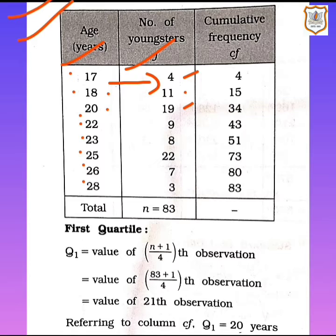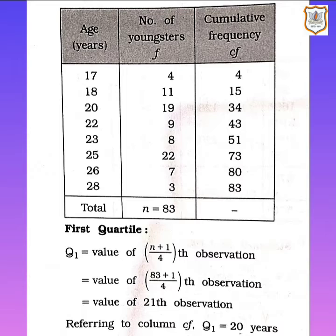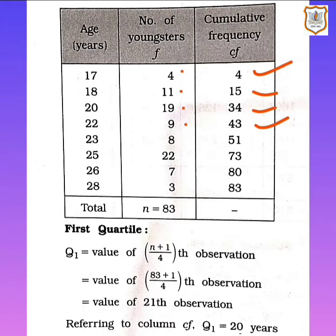Now we find the cumulative frequencies by keeping on adding the frequencies: 4, then 4+11=15, 15+19=34, 34+9=43, 43+8=51, 51+22=73, 73+7=80.